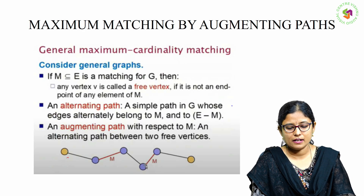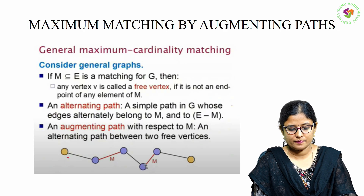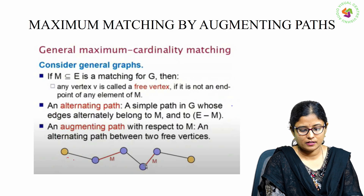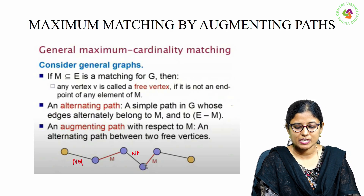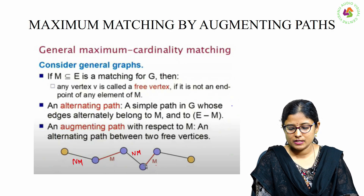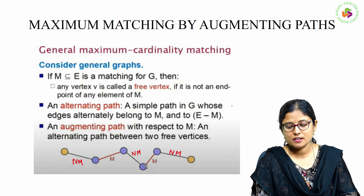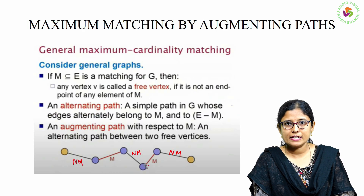What is an alternating path? A simple path in G whose edges alternatingly belong to M and to E minus M. Here, this edge is not a matching edge, this is a matching edge, this one is a matching edge, this one is a matching edge indicated by M, and this one is not a matching edge. So this path is nothing but an alternating path.